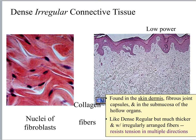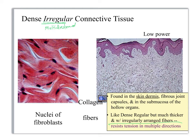On this slide, we are looking at dense irregular, which means the fibers are multidirectional. In terms of function, what you need to write is resist tension in multiple directions. Places where you find it: the skin dermis is one of the easy ones to remember, and fibrous joint capsules.